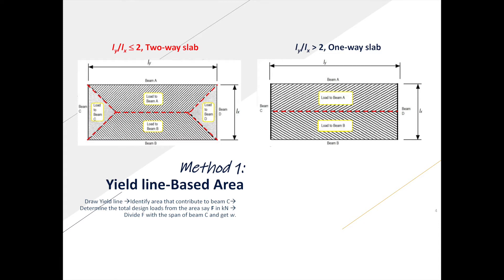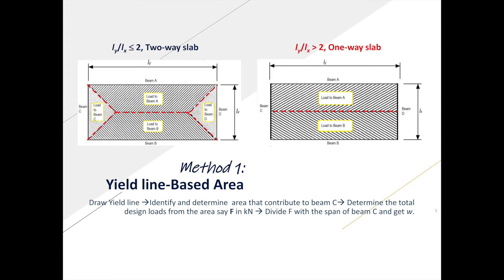BS 8110 defines slab as two-way when the ratio Ly over Lx, the longer span to the shorter span, is less than or equal to 2, and one-way when the ratio is greater than 2.